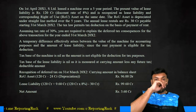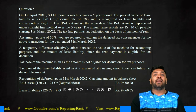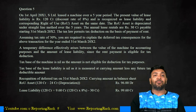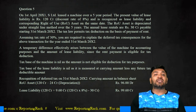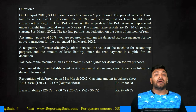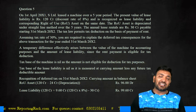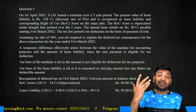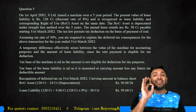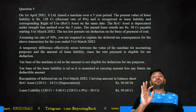S Limited leased a machine for a five-year period. The present value of the lease liability is 120 crores at a discount rate of 8%. It is recognized as a lease liability and a corresponding ROU asset on 1st April 2011. The ROU asset is depreciated over five years on a straight-line basis, and the annual lease rental is 30 crores payable from 31st March 2012. Tax law permits a deduction only on the payment of rent — as in the Income Tax Act. Assuming a tax rate of 30%, explain the deferred tax consequences at the end of 31st March 2012.